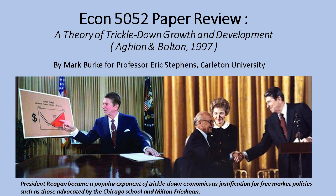This is a presentation for ECON 5052 Financial Economics, looking at Aghion and Bolton's 1997 paper on a theory of trickle-down growth and development. Trickle-down growth is a hugely important idea in economics — arguably the big dividing idea between left and right in politics. Should you let free market economics run free and let wealth trickle down to the poor, or should the government intervene because wealth does not trickle down enough or fast enough, and the poor need more direct assistance?